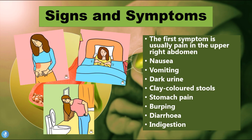Let's talk about some signs and symptoms of gallstones. The first symptom is usually pain in the upper right abdomen — that is where the gallbladder sits, just beneath the liver. The patient may also experience nausea and vomiting, dark urine and clay-coloured stools, stomach pain, burping, diarrhoea, and indigestion.